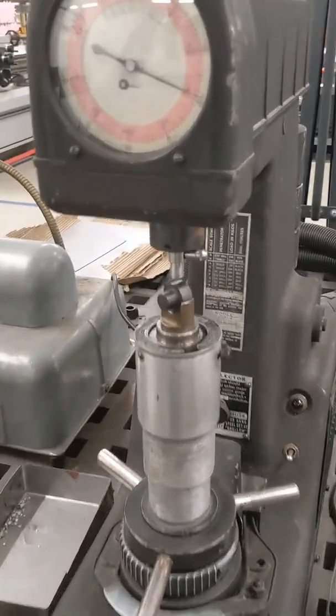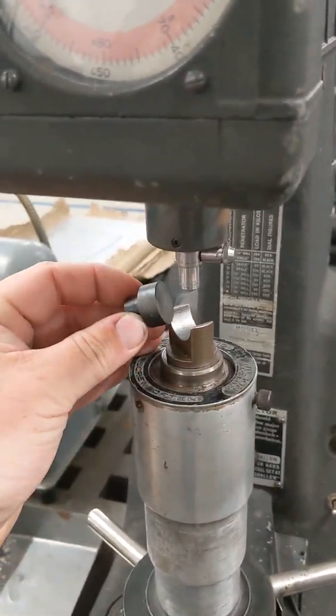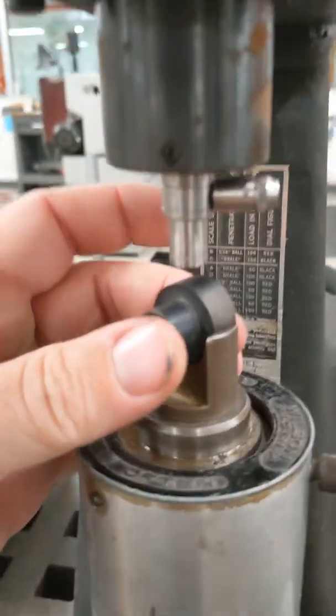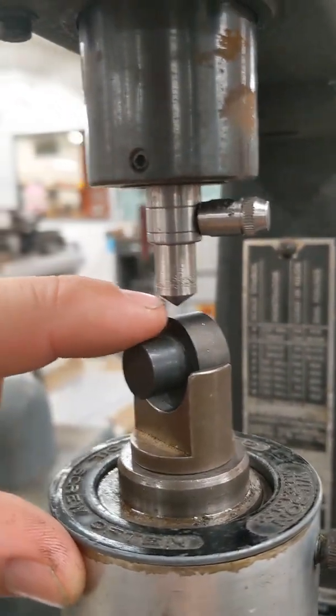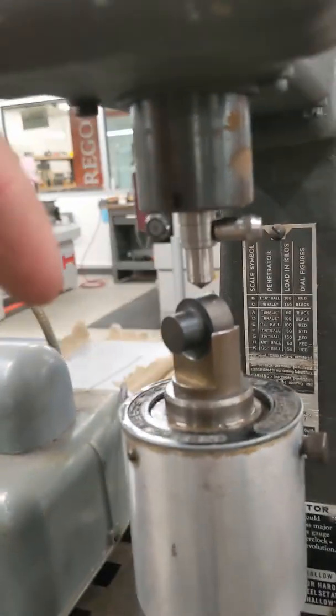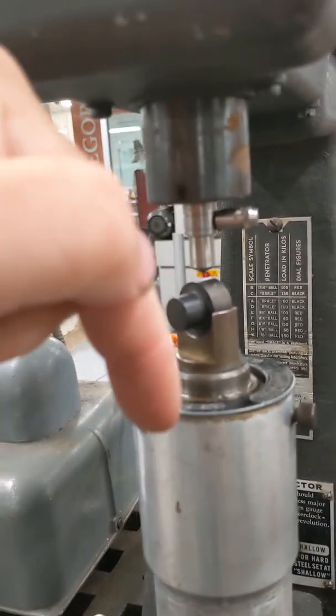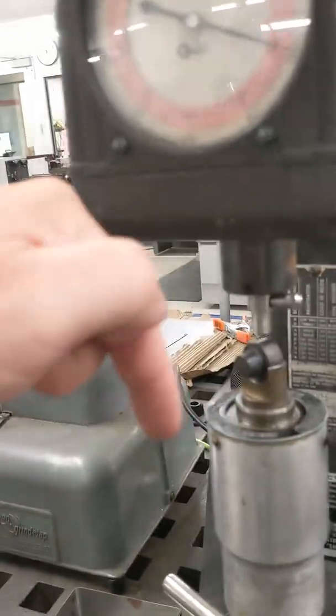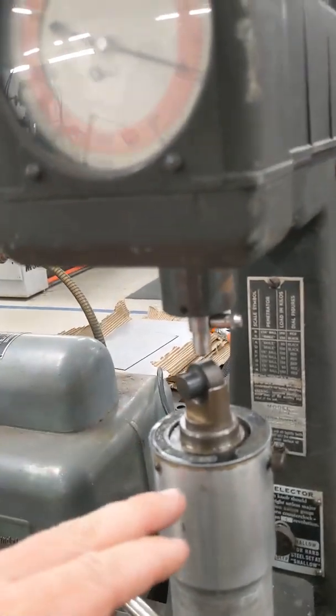The way that this tester works is that a test sample, this example is the hard face for the hammer, is placed in the tester. The sample is pushed up into the point of this diamond-tipped indenter, and the machine applies a load to the indenter and pushes into the material. When the load is removed, it measures how much the material springs back, which is what determines the hardness.